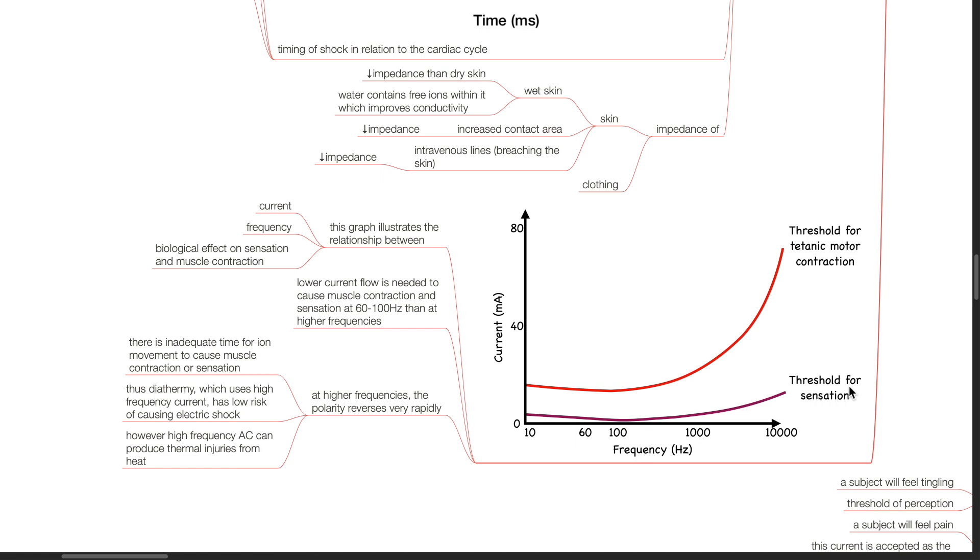This graph illustrates the relationship between current, frequency and the biological effect on sensation and muscle contraction. Lower current flow is needed to cause muscle contraction and sensation at 60 to 100 Hz than at higher frequencies. At higher frequencies, the polarity reverses very rapidly. There is inadequate time for ion movement to cause muscle contraction or sensation. Thus, diathermy which uses high frequency current has low risk of causing electric shock. However, high frequency AC can produce thermal injuries from heat.